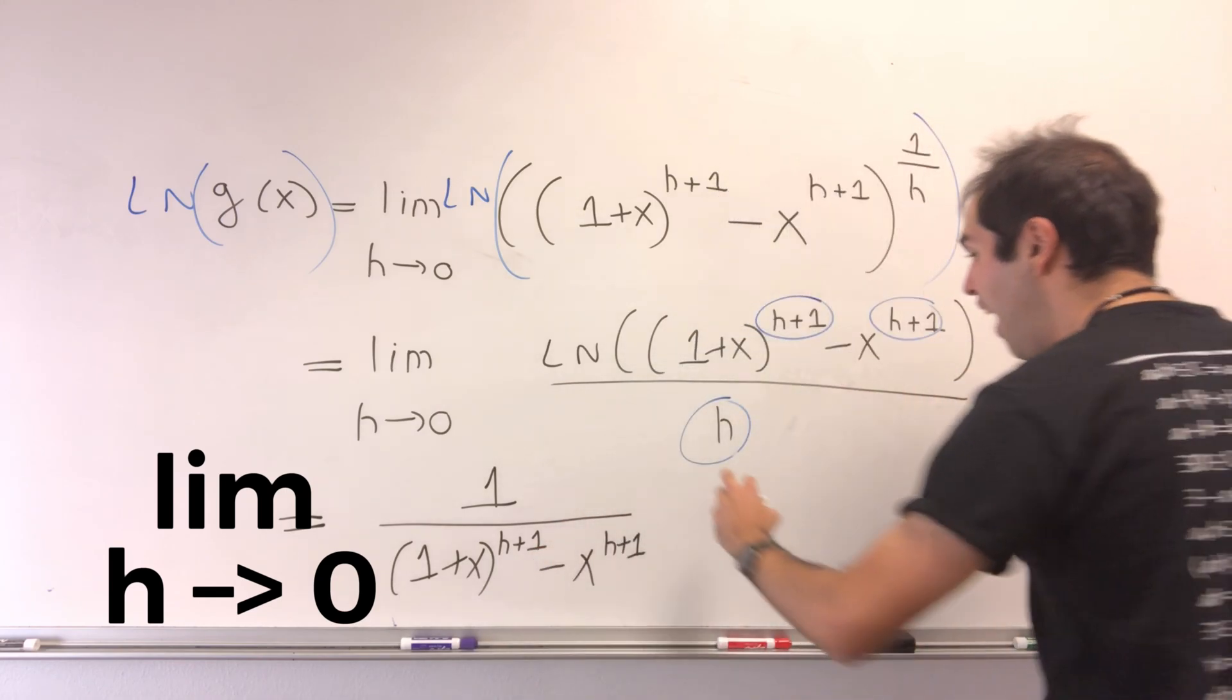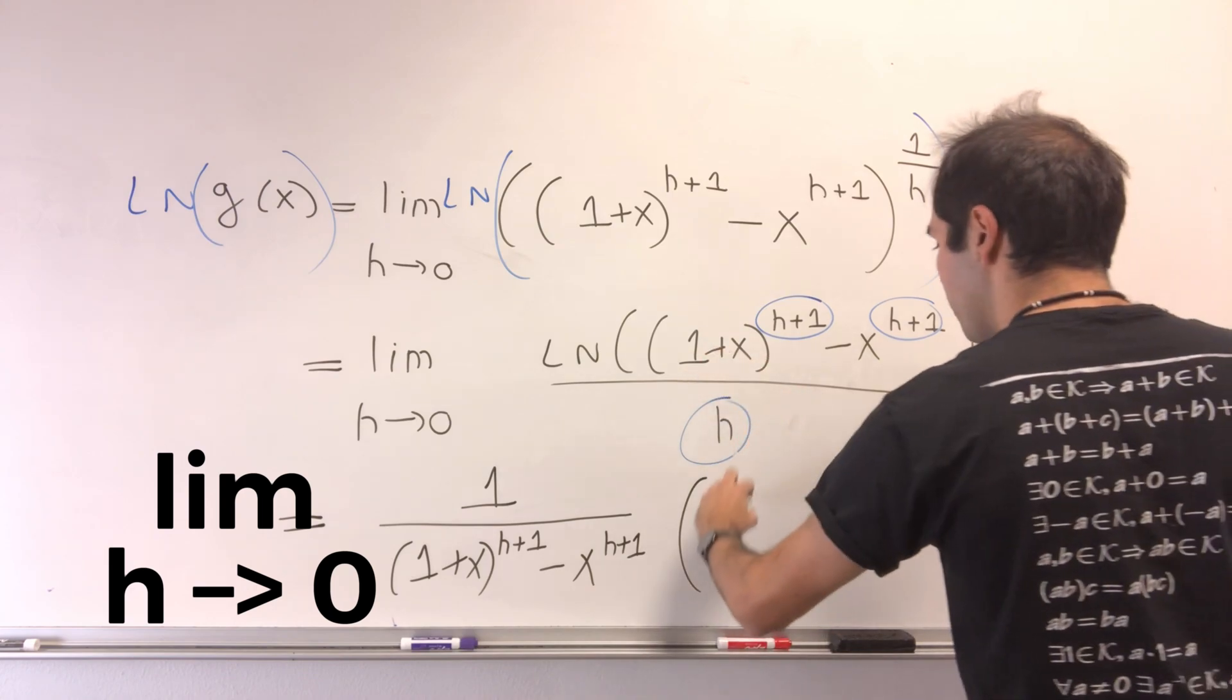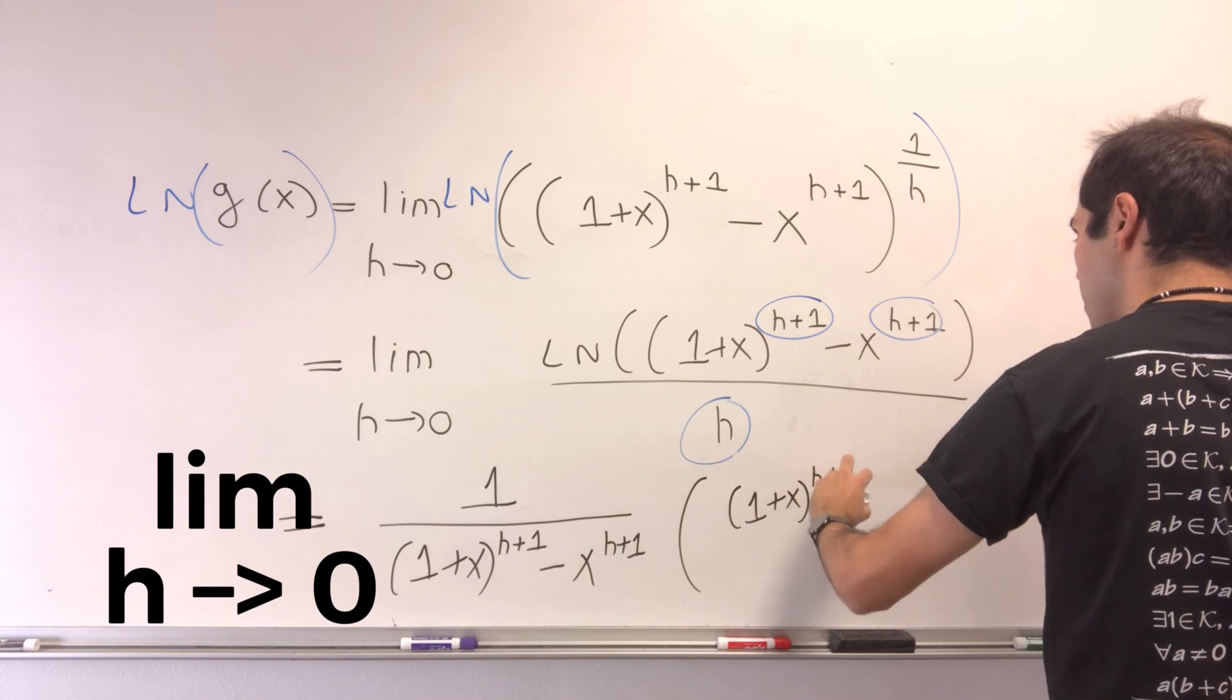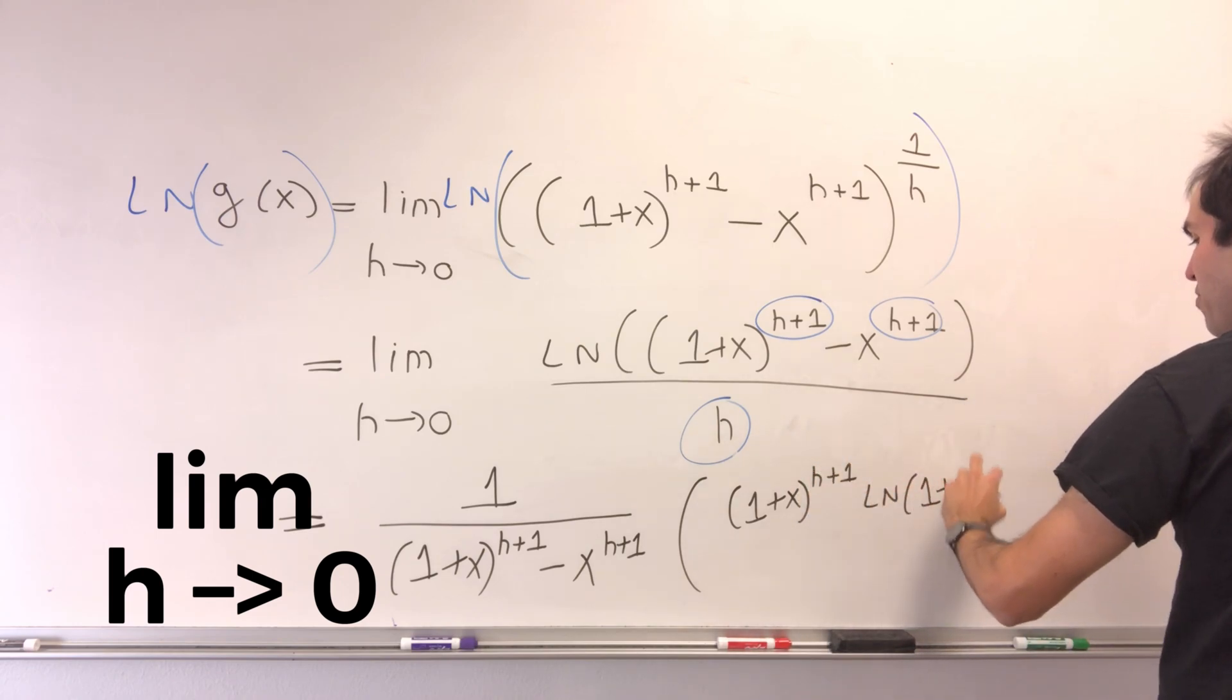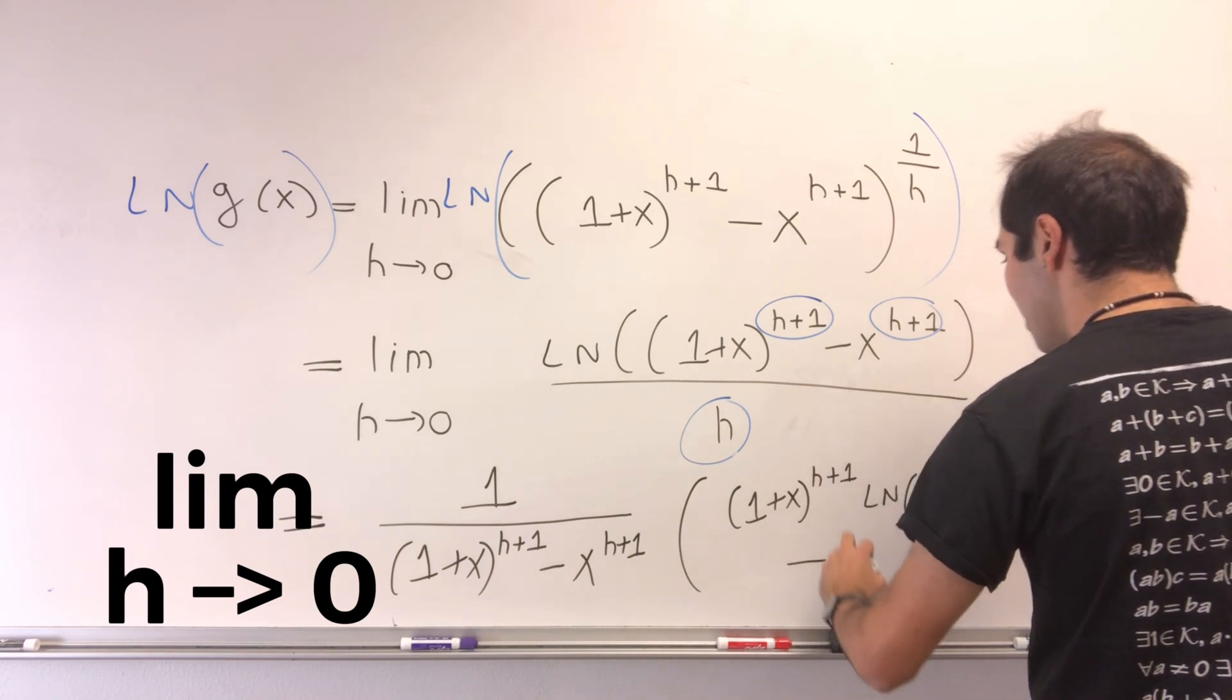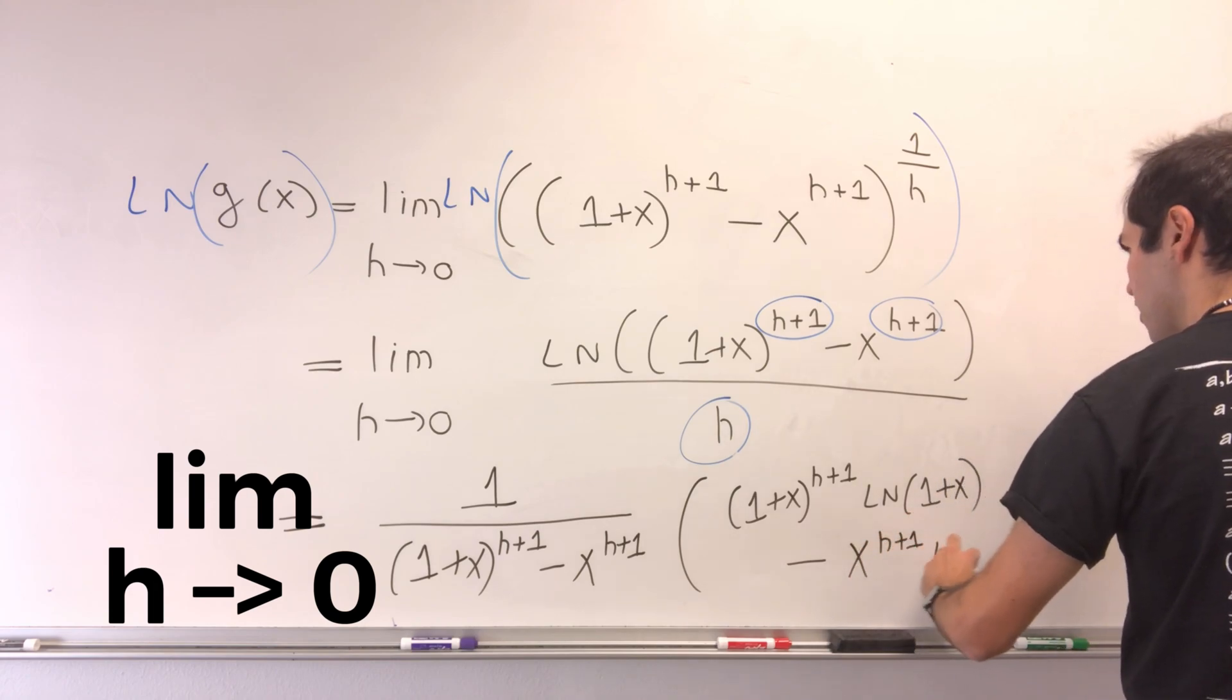And then times, the same thing, 1 plus x to the h plus 1 times ln of 1 plus x, remember what I said about 2 to the x, and then minus x to the h plus 1 ln of x.